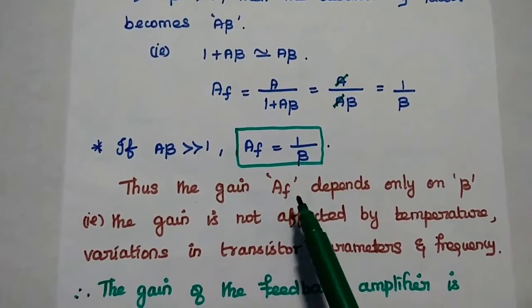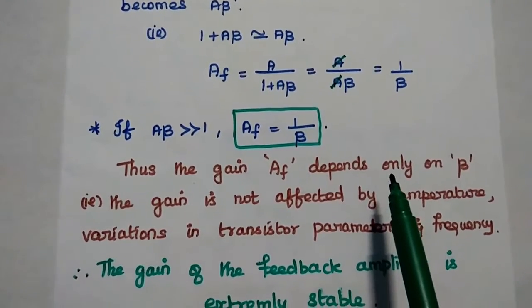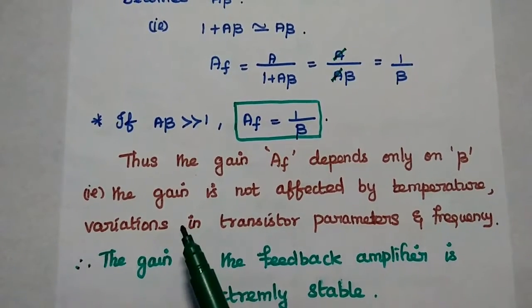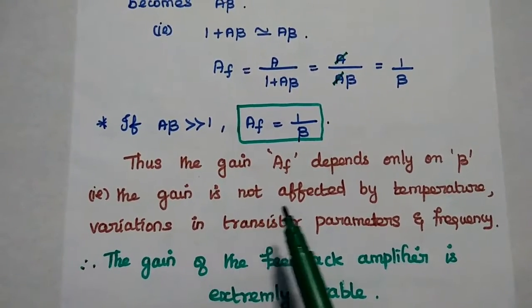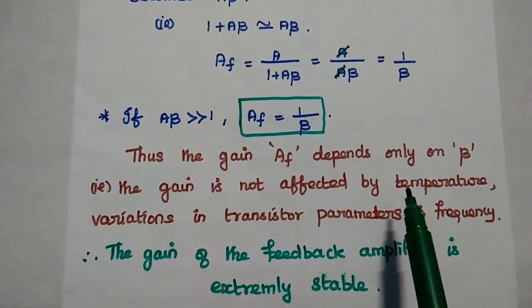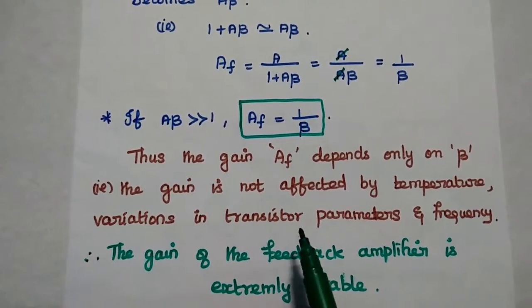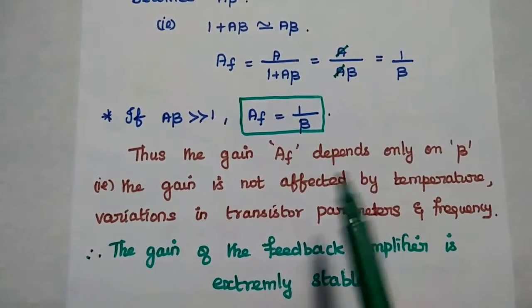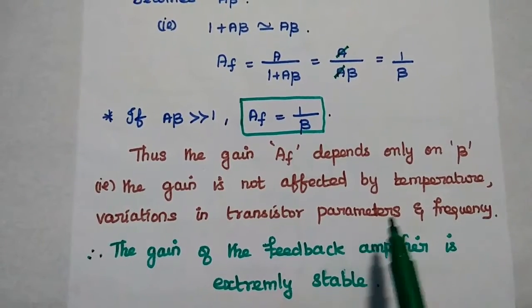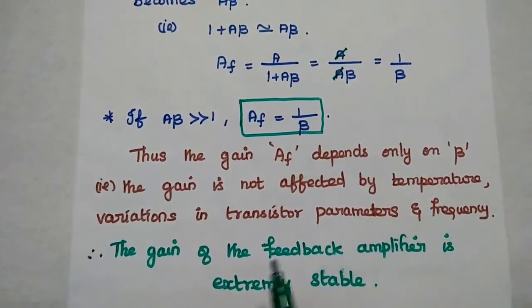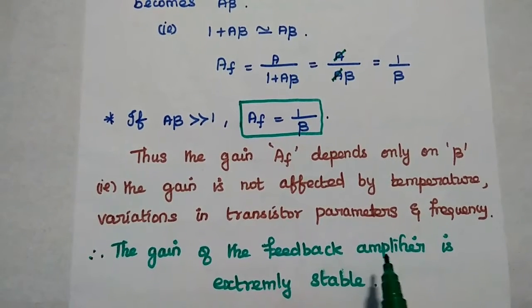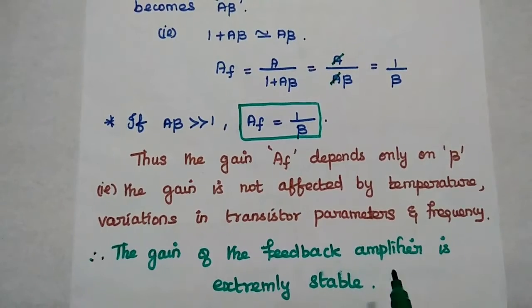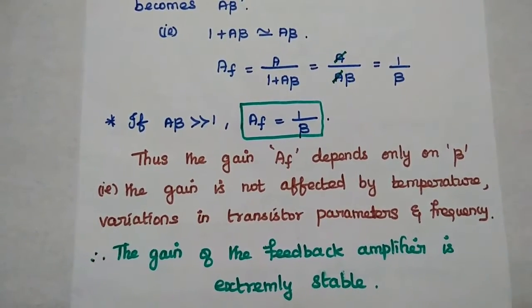The gain Af depends only on the feedback factor beta. The gain is not affected by temperature variations in transistor parameters or frequency — it is independent of temperature, transistor parameters, and frequency. Therefore, the gain of the feedback amplifier is extremely stable in the case of negative feedback.